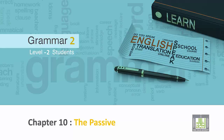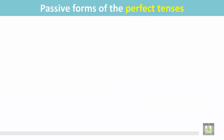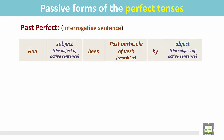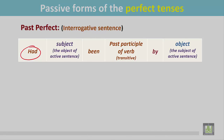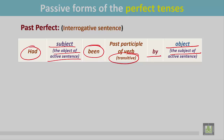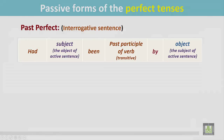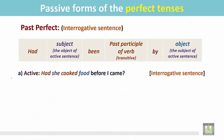Grammar 2 for level 2 students, Chapter 10: the passive — passive forms of the perfect tenses, past perfect interrogative sentence. See the structure: the sentence begins with 'had', the past form of the verb 'to have', then the subject. It is the object of the active sentence, and then after 'been', the verb in the past participle form, preposition 'by', and finally the object, which is the subject of the active sentence. See the examples.